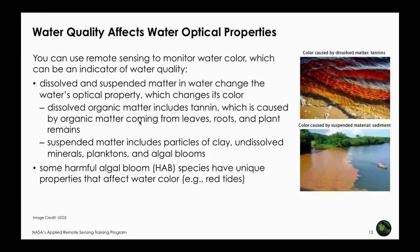Dissolved organic matter such as tannins from leaves, roots, and plants changes the color of water. Suspended matter such as clay, undissolved minerals, plankton, or algal blooms also changes the color of water. Some HABs have unique colors — you may have heard about red tides in coastal oceans. It is the change in water quality that changes water's optical properties, and that is measured as change in color by satellite sensors.